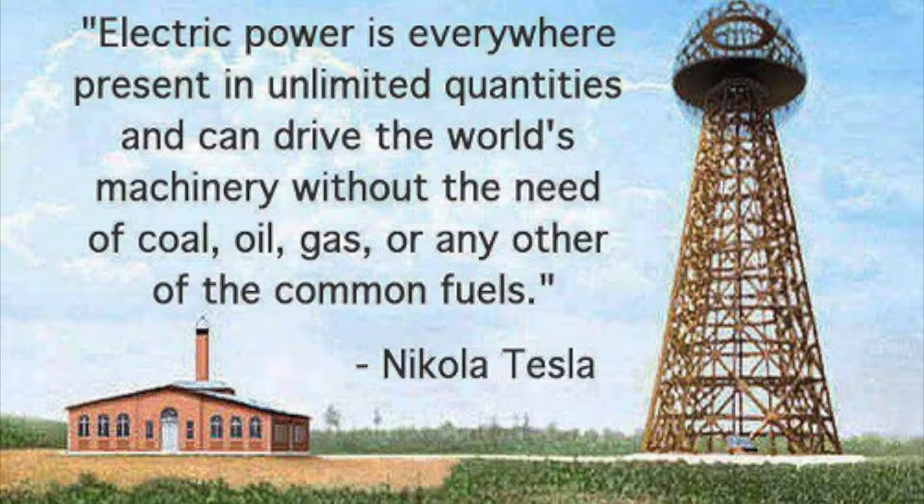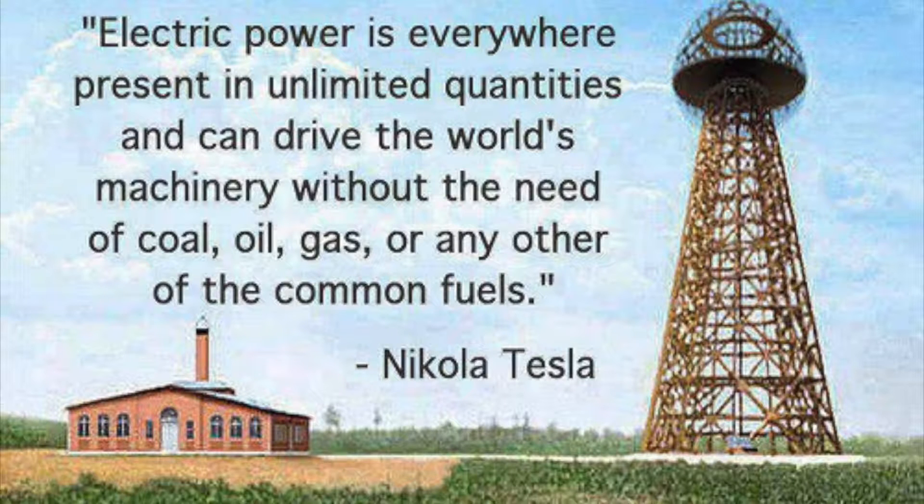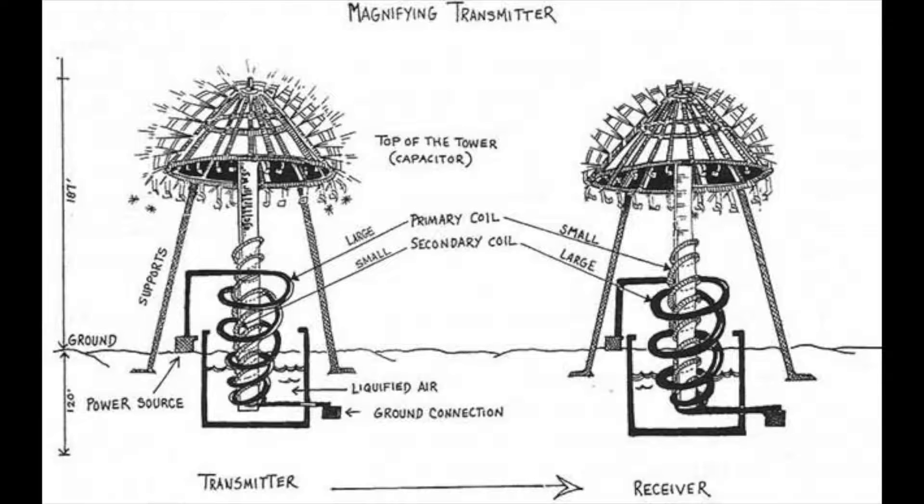You might be wondering, why would they hide this from us? Why would they make up gravity to hide the electromagnetic universe? And the answer is free energy. Tesla says electric power is everywhere, present in unlimited quantities, and can drive the world's machinery without the need of coal, oil, gas, or any other of the common fuels. Nikola Tesla knew that we could manipulate the electromagnetic field here on Earth, the thing we call gravity, and we could use it as free energy to produce anything we'd like. But the thing is, the powers don't like that at all. Because remember, they own all of the energy companies.